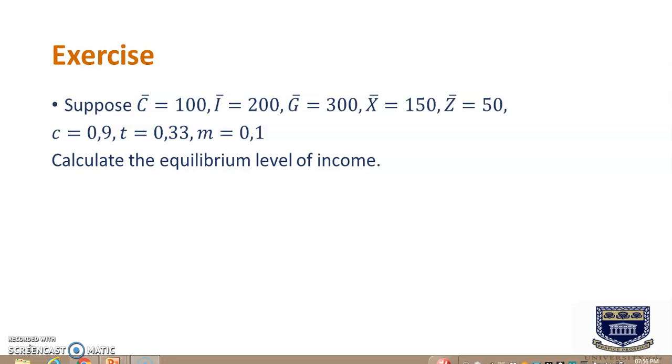Now, suppose you are given autonomous consumption C-bar equal to 100, autonomous investment spending equal to 200, autonomous government spending equal to 300, exports which is also autonomous equal to 150, and autonomous imports equal to 50. You are given the marginal propensity to consume equal to 0.9, the tax rate is 0.33, and the marginal propensity to import m is equal to 0.1. The question says calculate the equilibrium level of income.